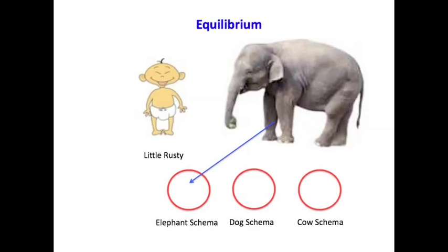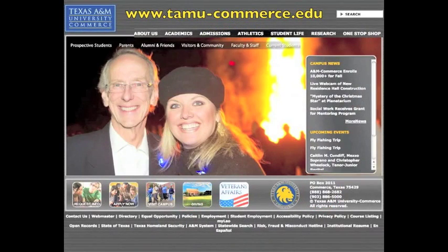The purpose of all of these little pictures and things was really to help you understand the difference between assimilation and accommodation. Assimilation neatly fits information into an existing schema. Accommodation requires the creation of a new schema in order to make the information fit into his brain and his experiences. I hope you got a little bit out of this. Watch out for elephants, dogs, and cows.